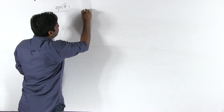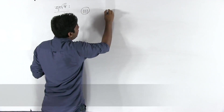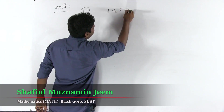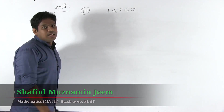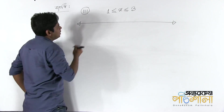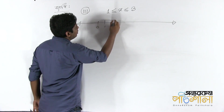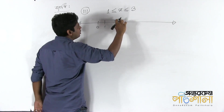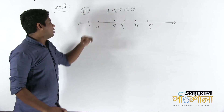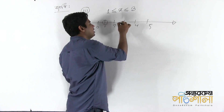This is number 3. What is the number 3? 1 is less than or equal to x and 3. This is the number 3. What is the number 3? 0, 1, 2, 3, 4, 5, minus 1. This is the number 3.